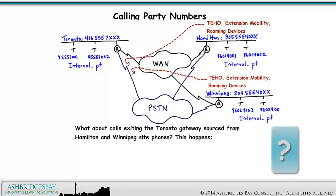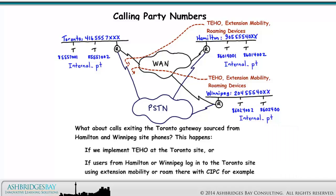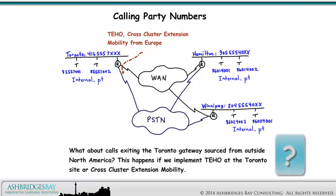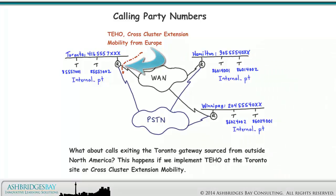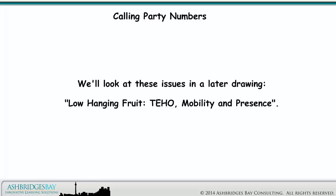What about calls exiting the Toronto gateway sourced from Hamilton and Winnipeg site phones? This happens if we implement tail-end hop-off at the Toronto site, or if users from Hamilton or Winnipeg log into the Toronto site using extension mobility or roam there with CIPC. What about calls exiting the Toronto gateway sourced from outside North America? This happens if we implement tail-end hop-off at the Toronto site or cross-cluster extension mobility. We'll look at these issues in a later drawing covering low-hanging fruit, tail-end hop-off, mobility, and presence.